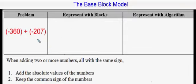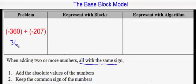In this problem, we're adding two integers using the chip model, and we have a situation where both numbers are negative — they have the same sign. To add numbers with the same sign, you add the absolute values of the numbers, and in the end you keep the common sign in your final answer. The absolute value of negative 360 is 360, and the absolute value of negative 207 is 207. So we will add the absolute values, and at the very end we'll keep the common sign of negative, so my final answer will be some negative number.